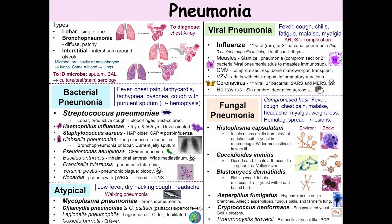Bacillus anthracis is a spore-forming aerobe. It has a thick polypeptide — not a polysaccharide — capsule made of poly-D-glutamic acid. The anthrax toxin has three distinct components, two of which are virulence factors: lethal factor, which is a metalloprotease that degrades MAP kinase, killing the cell; and edema factor, which is an adenylate cyclase that increases cyclic AMP, causing the cell to lose water. Both of these agents need protective antigen to enter the cell.